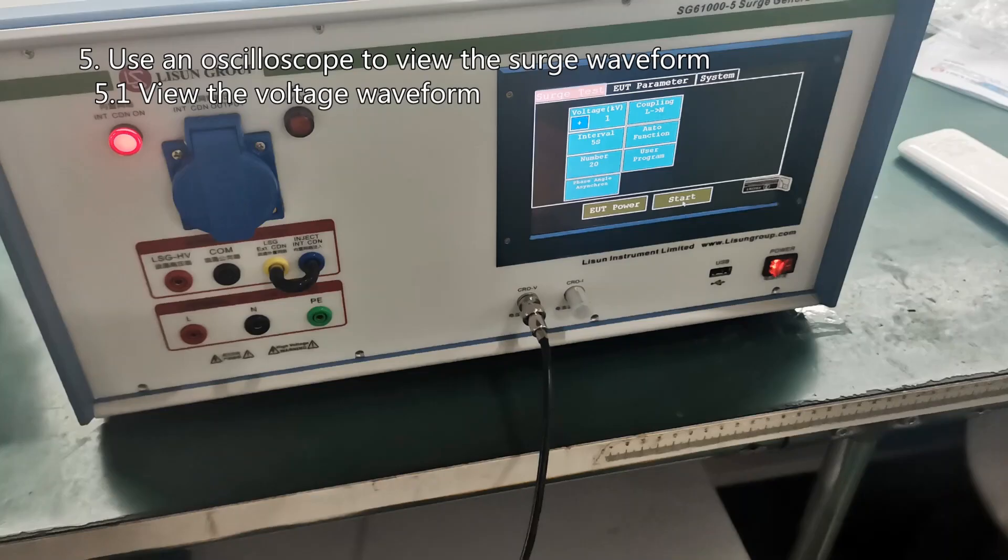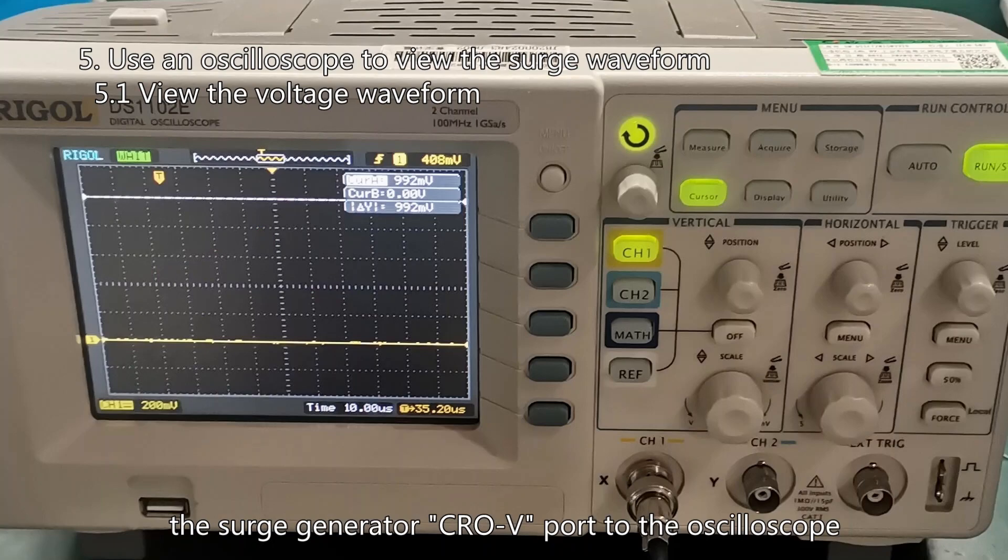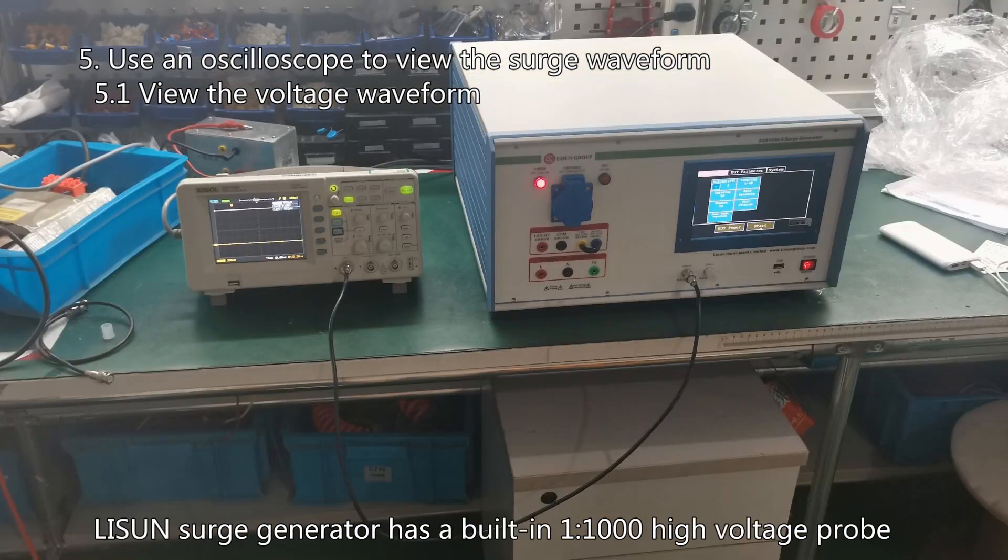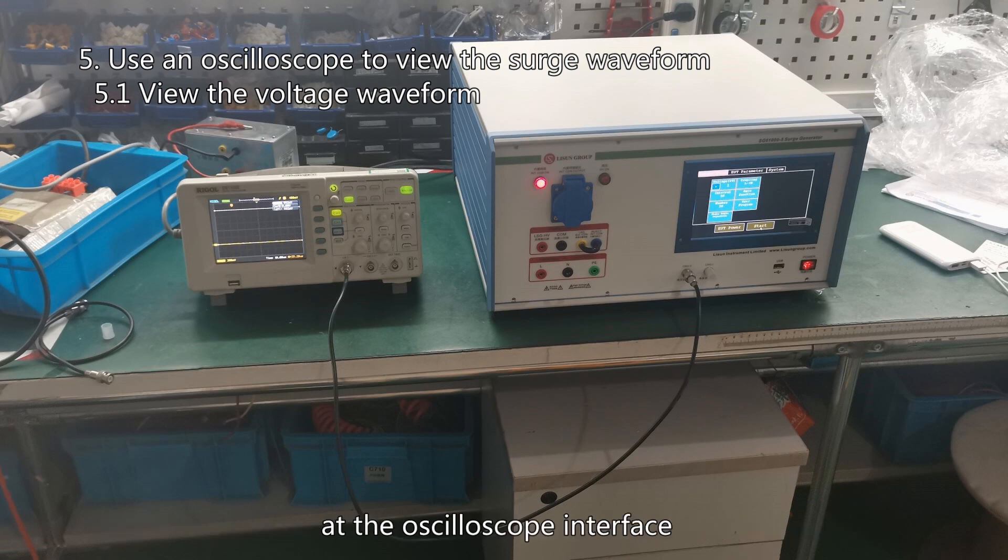Then use a coaxial cable to connect the surge generator CROV port to the oscilloscope. The surge generator has a built-in 1 to 1,000 high voltage probe at the oscilloscope interface.